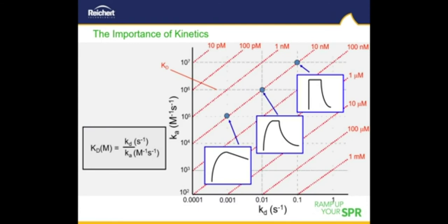Why are kinetics important? Mathematically, the equilibrium dissociation constant, or affinity constant, symbolized by KD, is defined as the off rate divided by the on rate. Interactions with vastly different on and off rates can have the same equilibrium dissociation constant. In this example along the diagonal, three completely different interactions all have a 10 nanomolar binding affinity. The lower inset shows a slow on rate followed by a slow off rate, while the upper inset shows a fast on rate followed by a fast off rate. These interactions provide the same affinity but have widely different kinetics. Rates are extremely important in determining how biological processes or pathways proceed and are also critical in considering the selection of drug candidates.